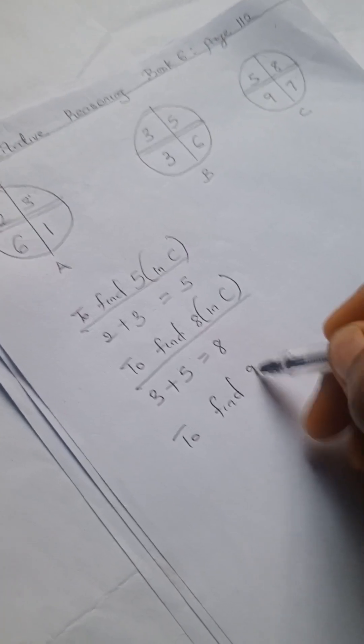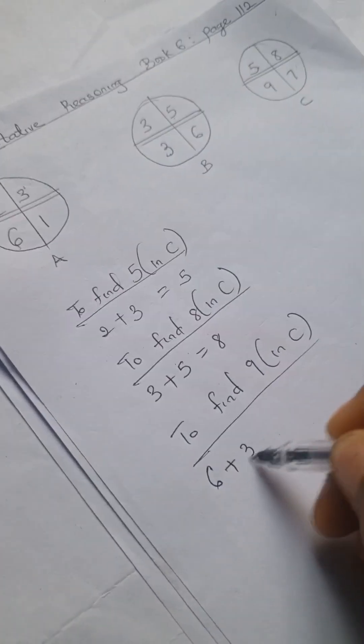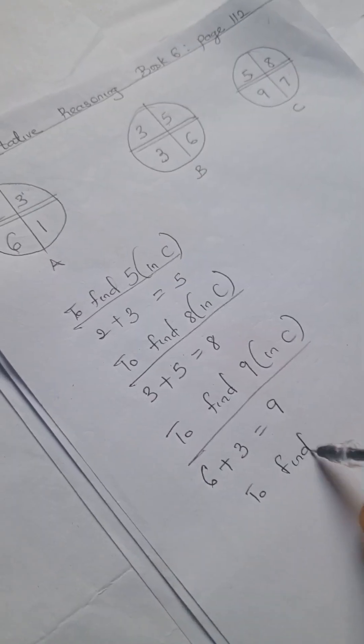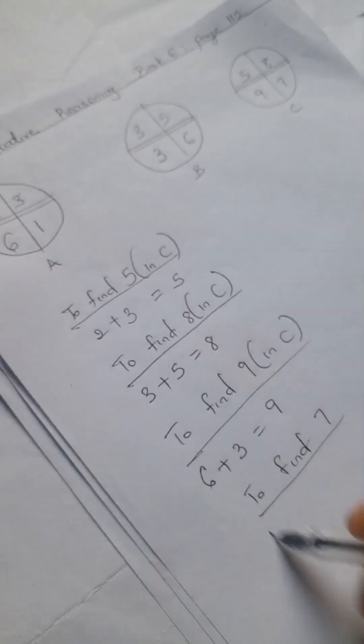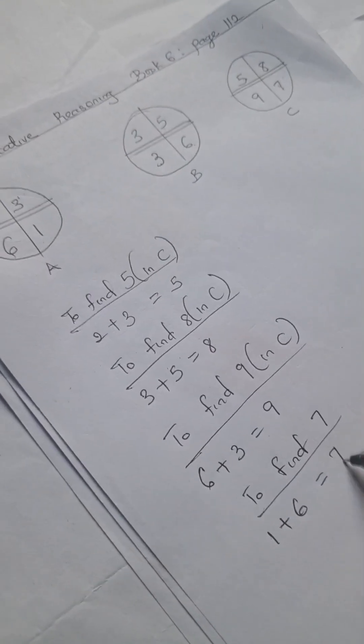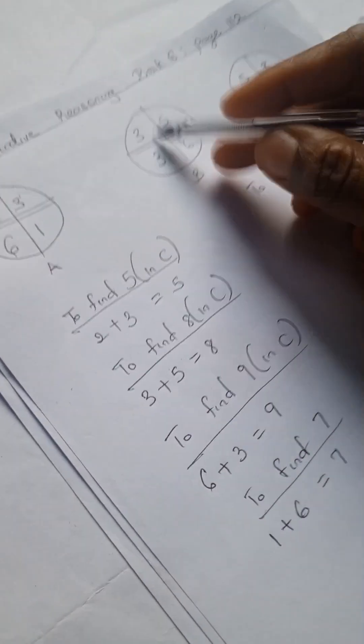And to find 9 in C, we have 6 in A plus 3, that gives us 9. And to find 7 here, we have 1 plus 6, that gives us 7. Okay, so assuming we want to find any number in B...